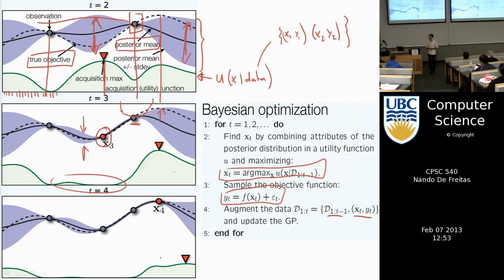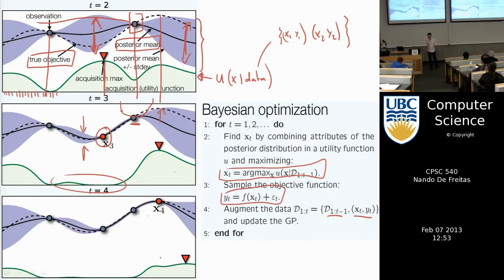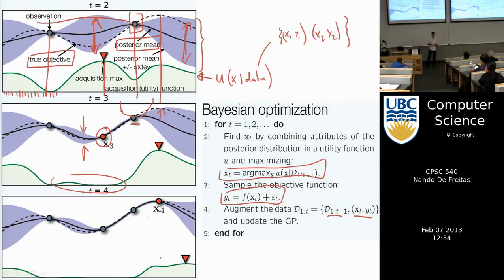Another question: can you use gradients as well? Yes — but since we don't know the true objective function, we likely don't know its gradient either. You can use finite differences to approximate a gradient, and indeed many people do, but finite differences tend to be noisy. Another problem with gradients is that they can be extremely slow to converge — it might take 10,000 iterations.